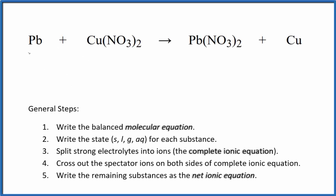To write the balanced net ionic equation for Pb plus Cu(NO3)2, we first have to balance the molecular equation. This is the molecular equation, and it's already balanced, so that's kind of nice.